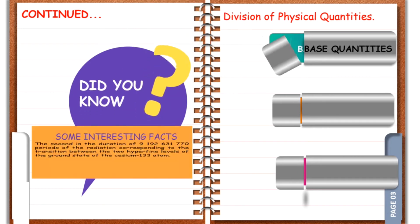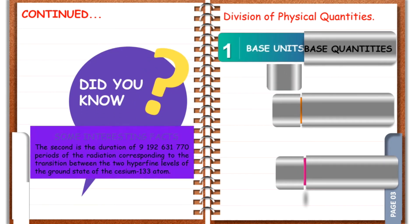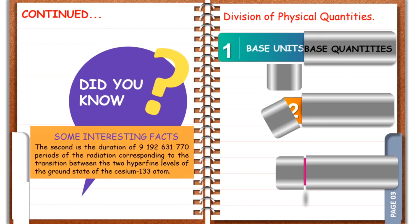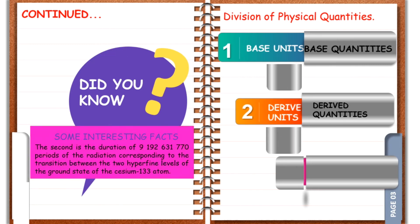We divide physical quantities into three basic types: base quantities, derived quantities, and supplementary quantities.